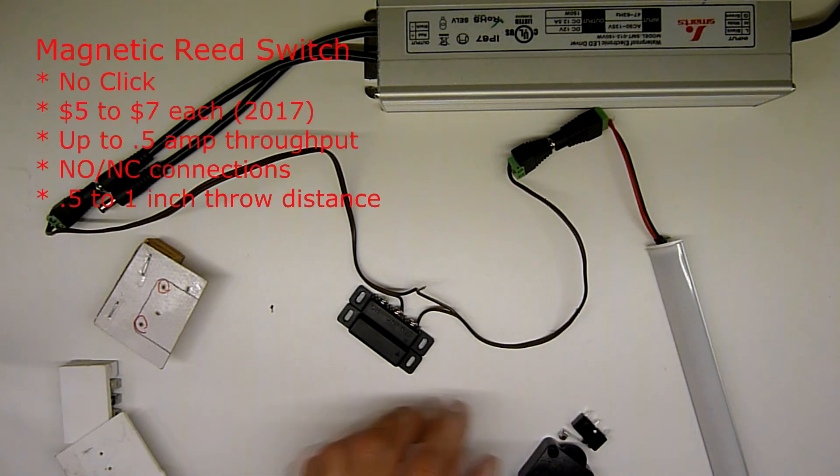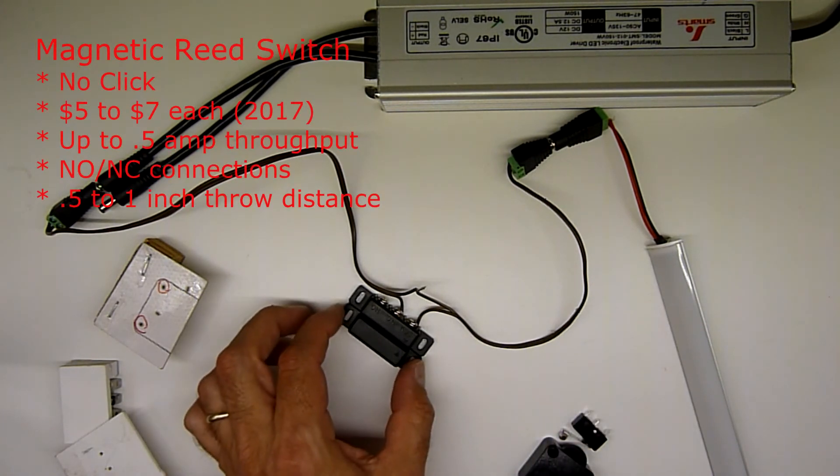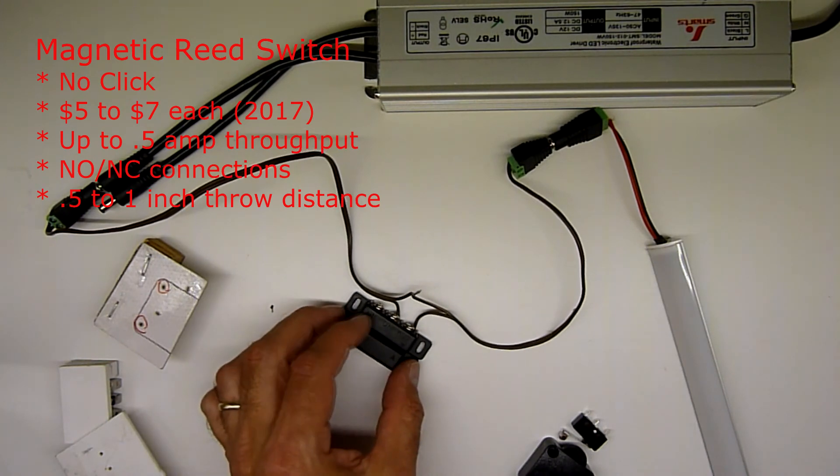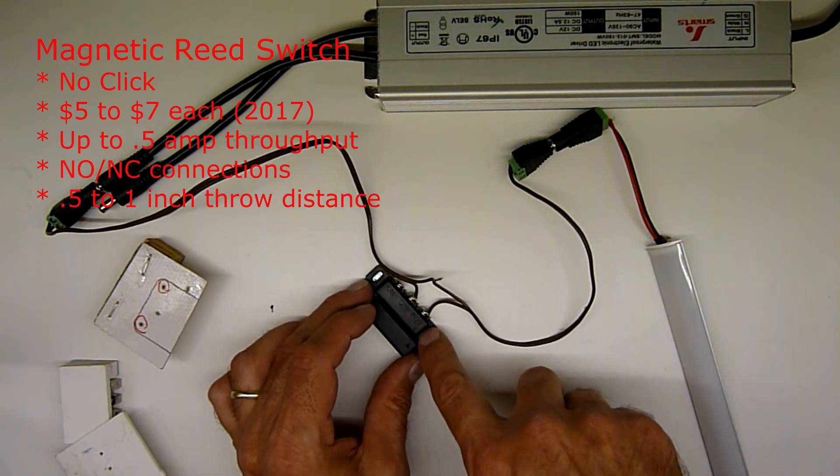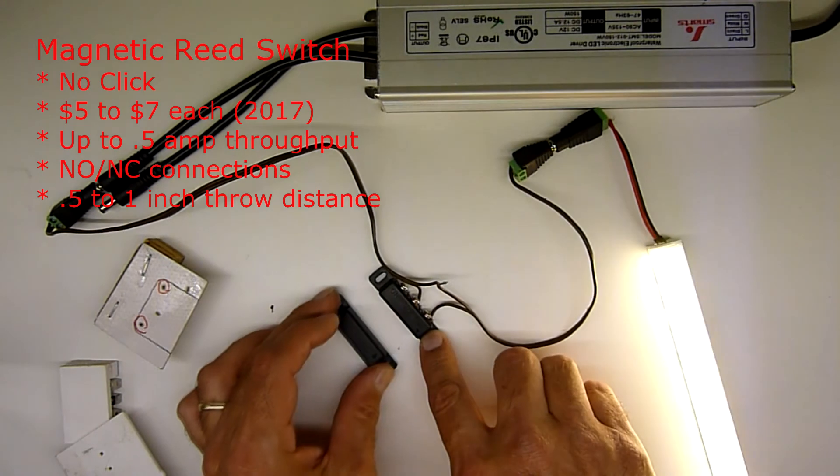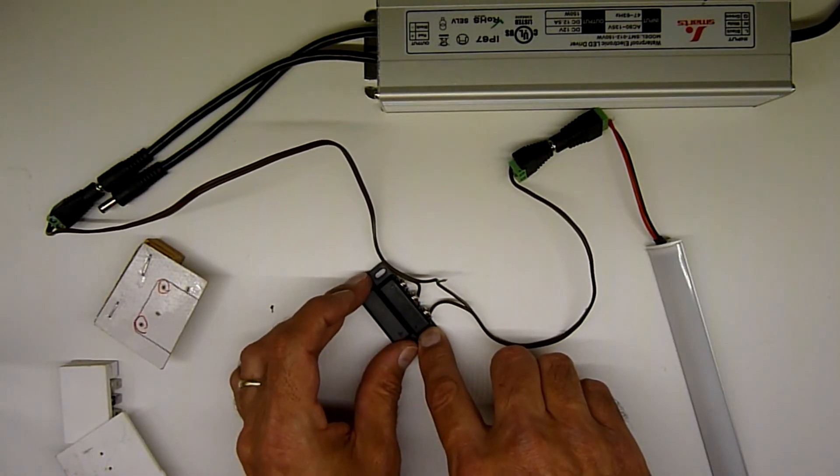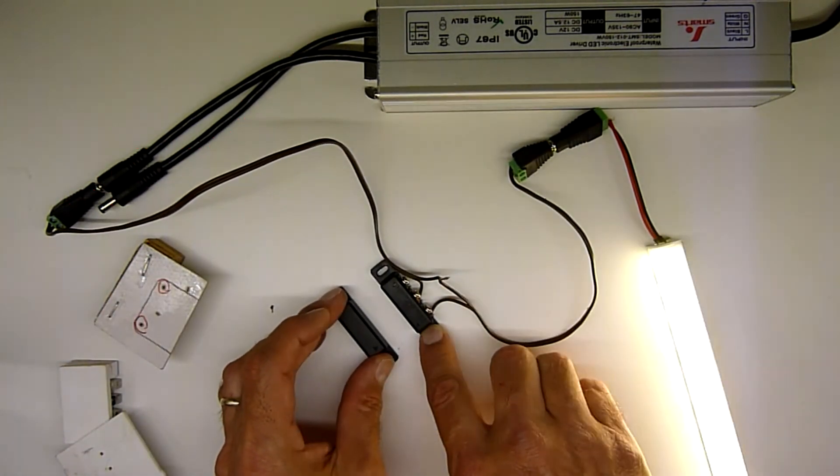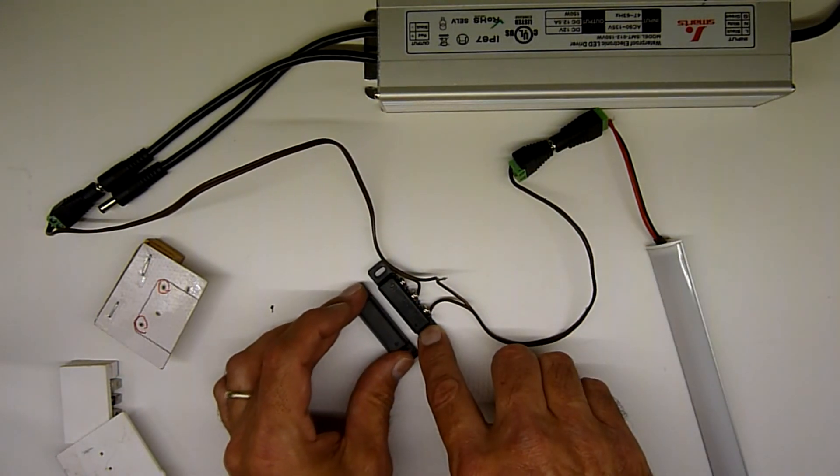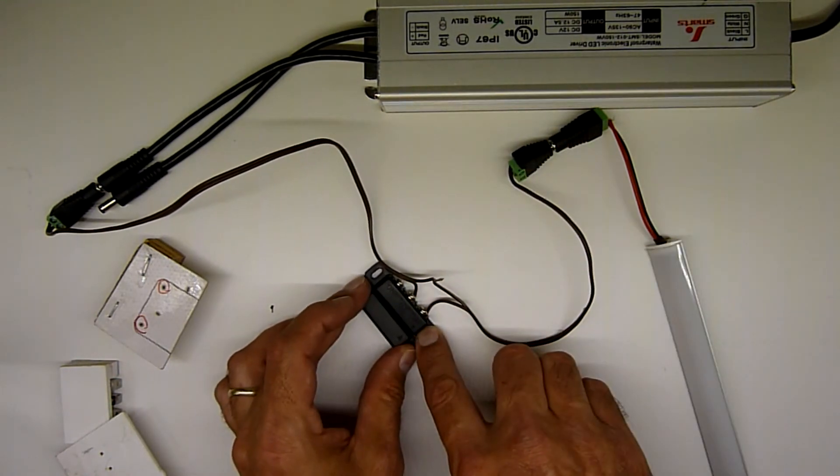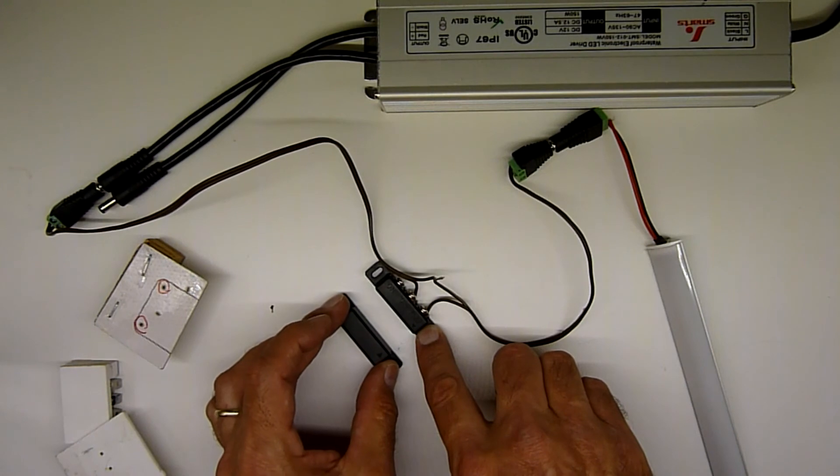The first one I'm going to cover here is this reed switch. In a reed switch, there's a little tube inside, and as the magnet, which is in this piece right here, comes apart, you'll see that this light turns on. That's going to be anywhere from a half inch to an inch. The distance is going to vary based on your installation.